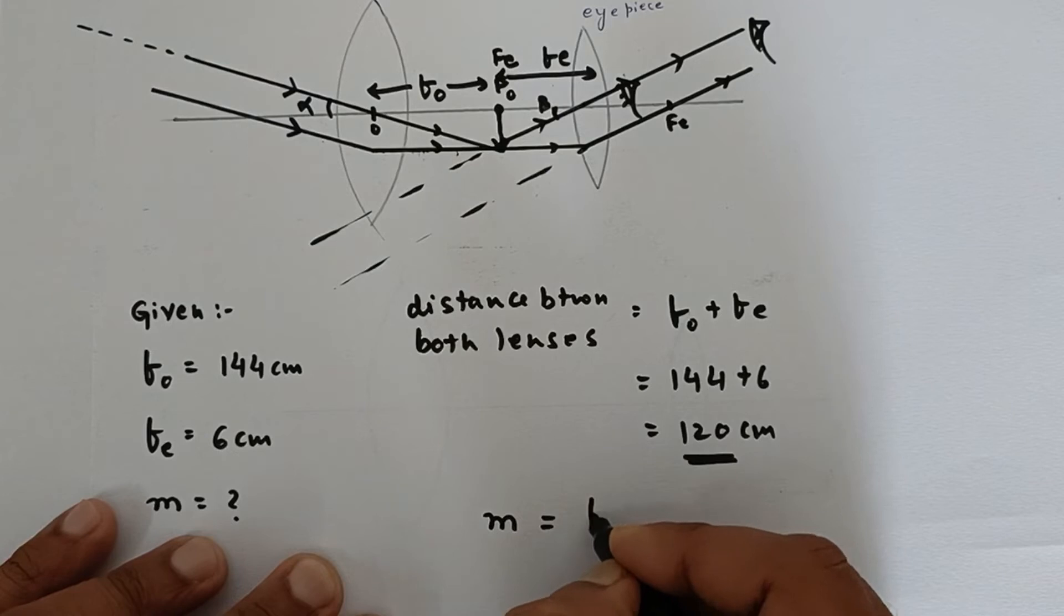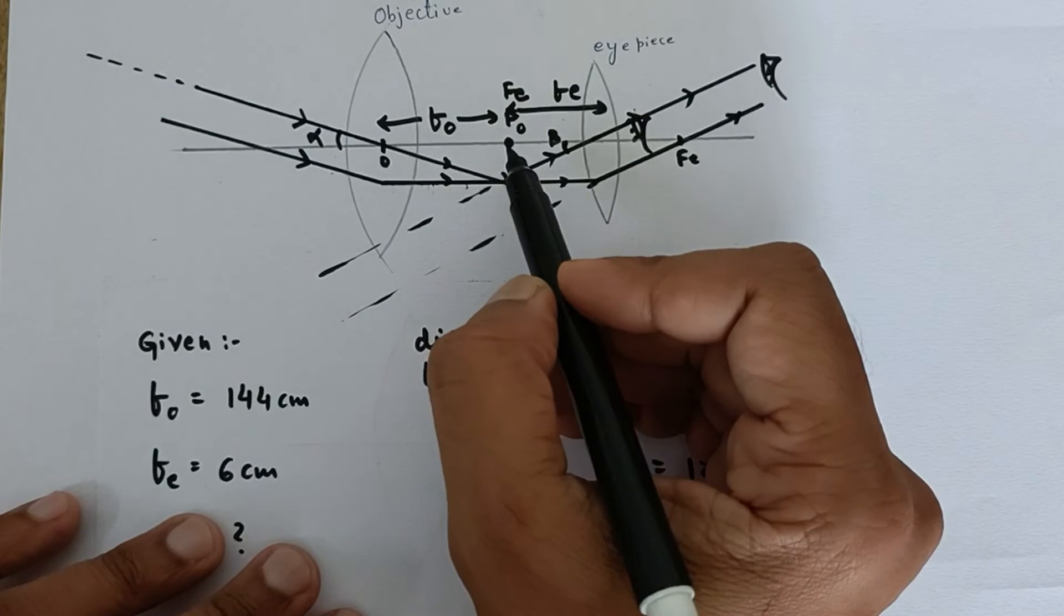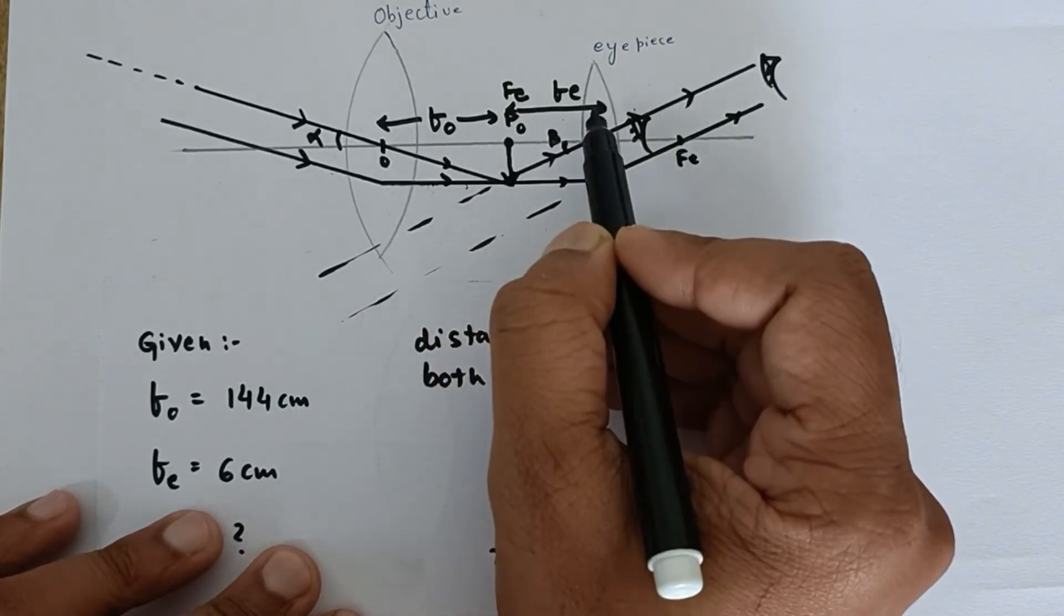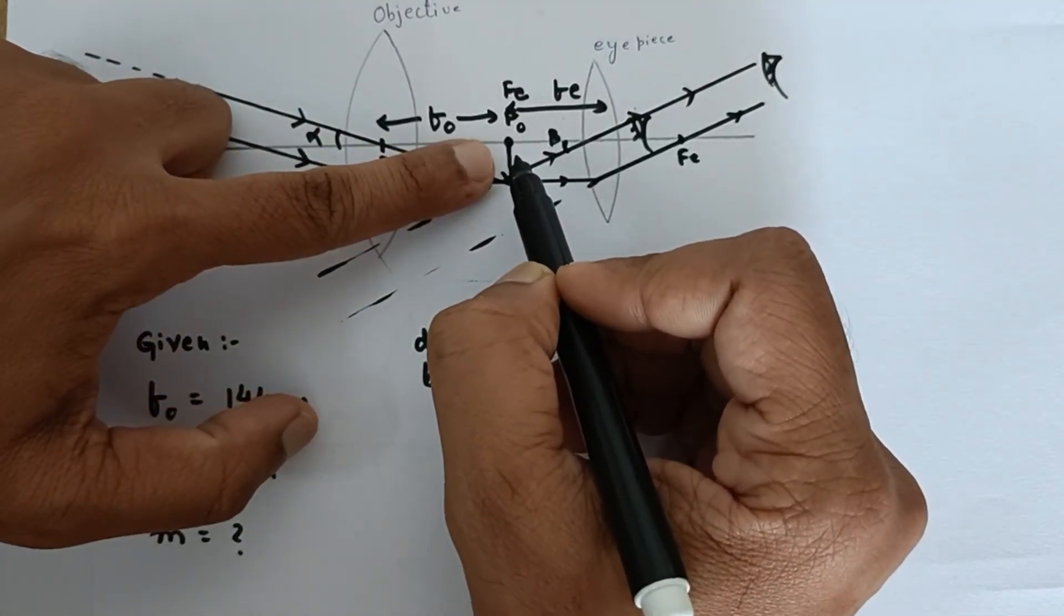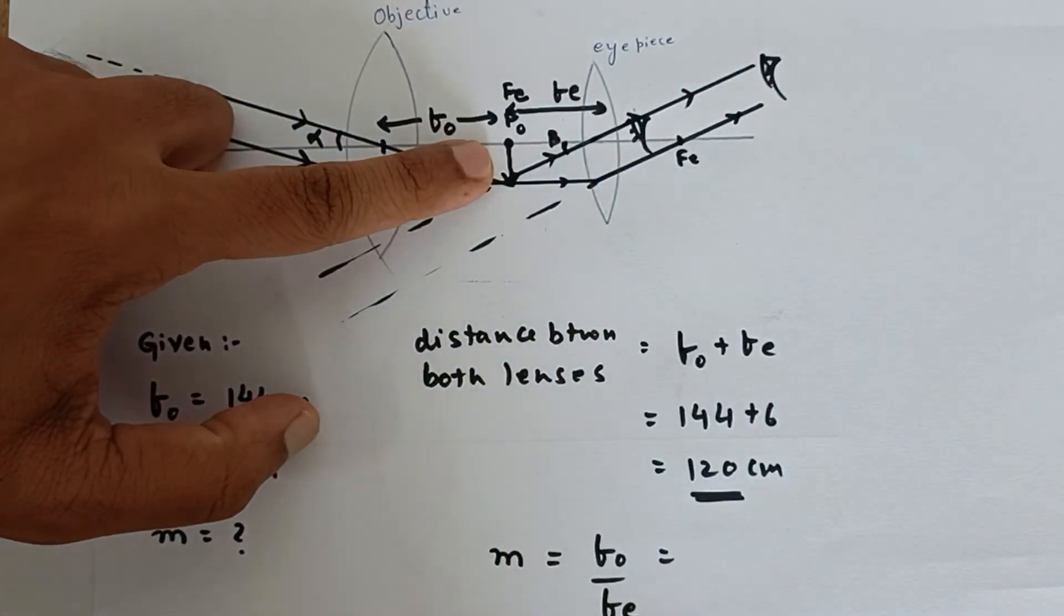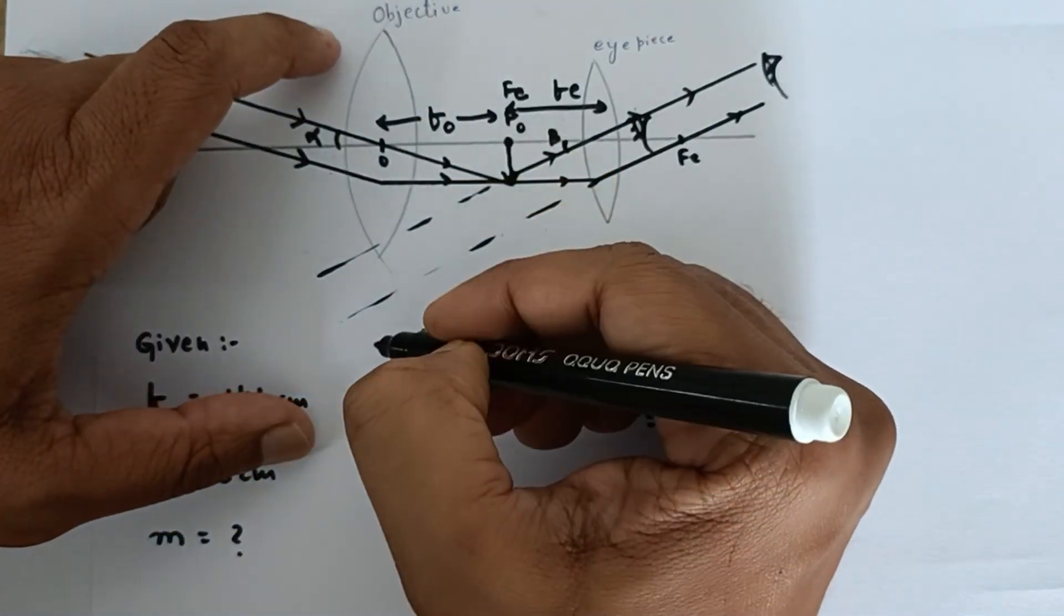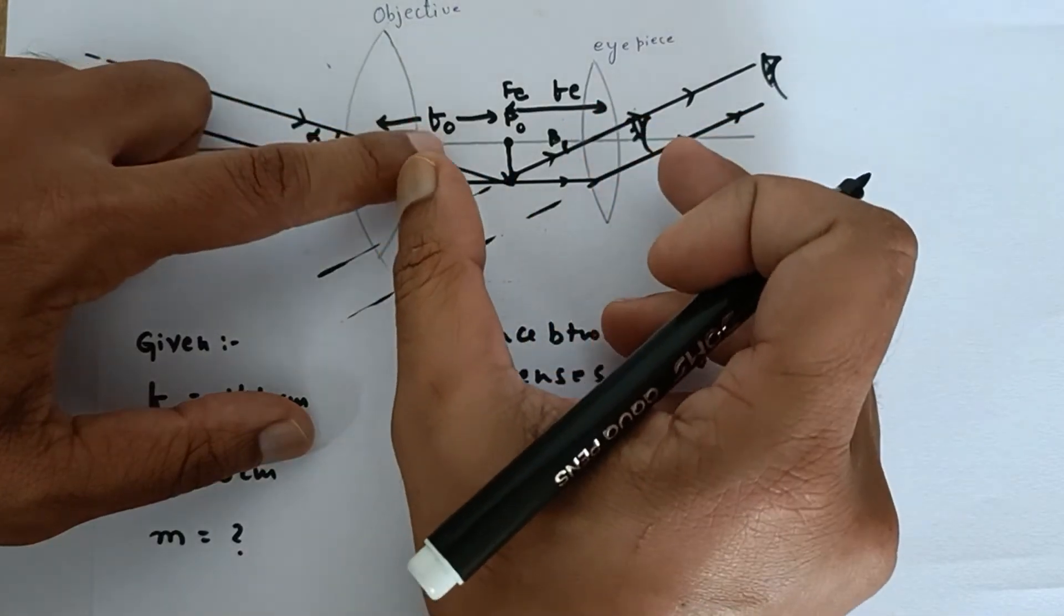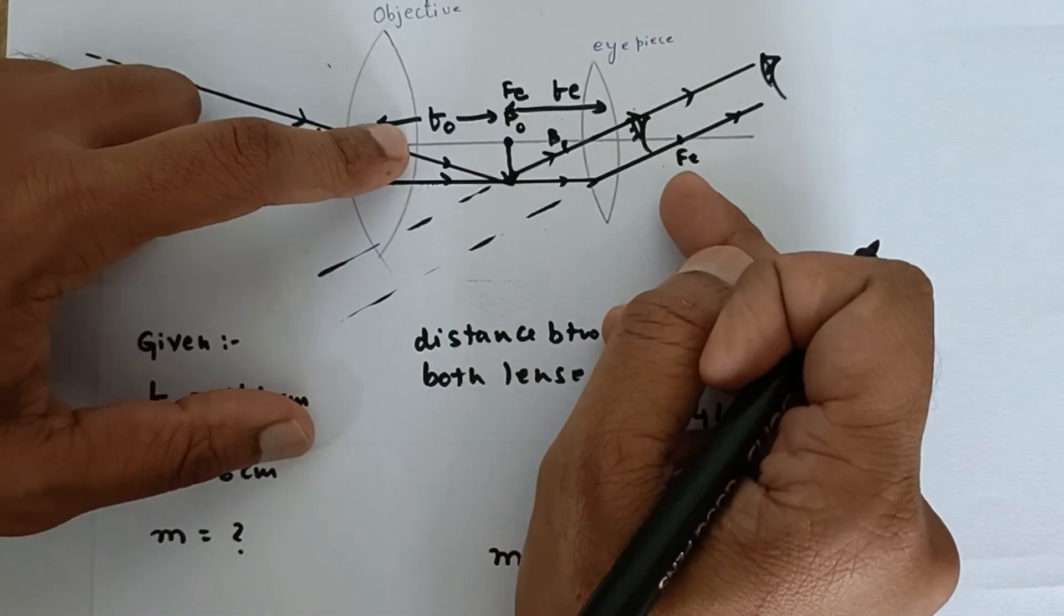I am saying it might also be possible that this image is slightly shifted towards the eyepiece, and this object, which is now an object for the eyepiece, since it is between f and o, then the final image would be somewhere over here. In that particular case, the final image is located at capital D distance, 25 centimeters from the lens, not at infinity.